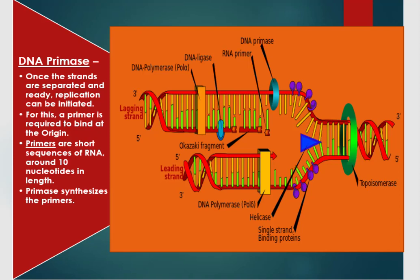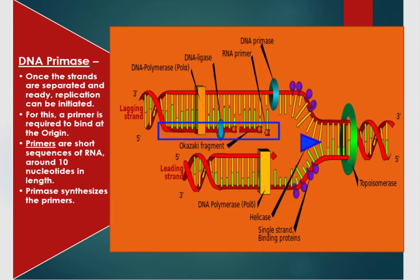For this reason, a primer is required to bind at the origin of replication. For this process, primase synthesizes the RNA primers that can be attached on the lagging strand.